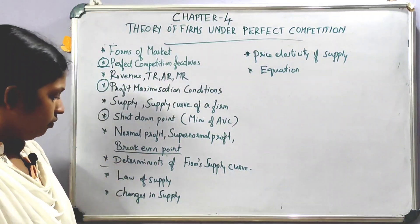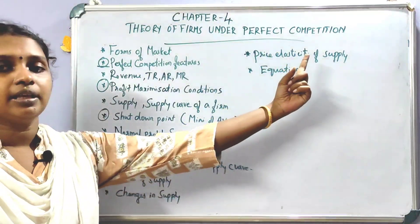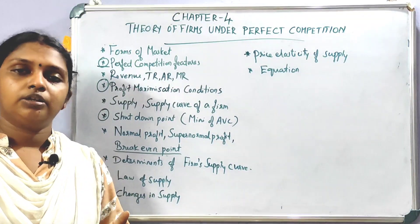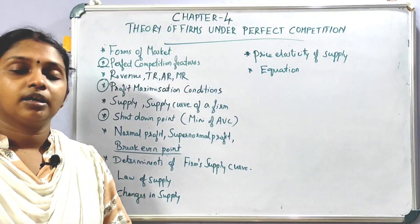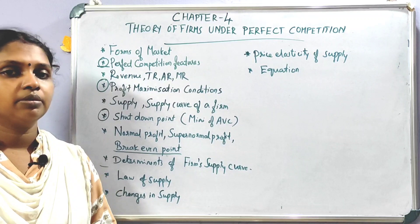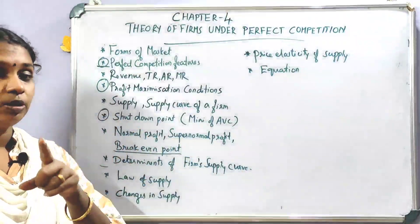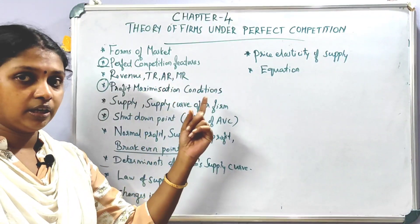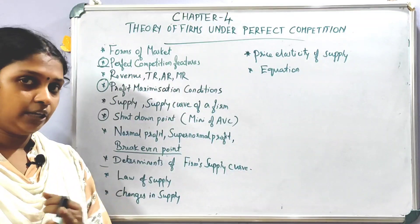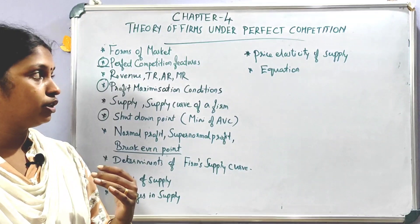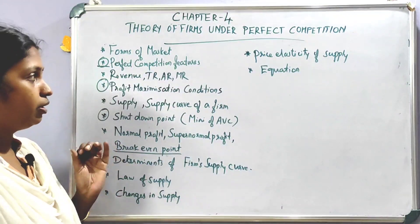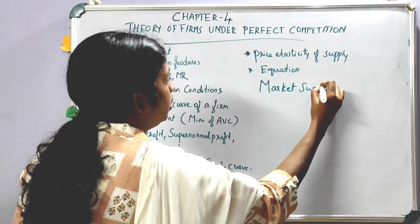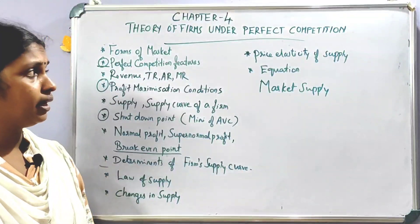Then the Law of Supply, Changes in Supply, Price Elasticity of Supply — there is an equation for Elasticity of Supply. In the fourth chapter: Perfect Competition features, profit maximization conditions, shutdown point, breakeven point, supply, and market supply.